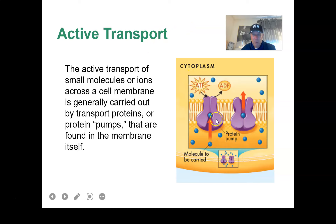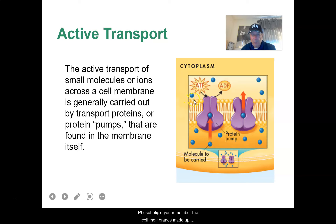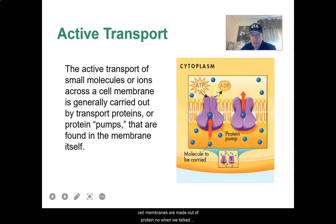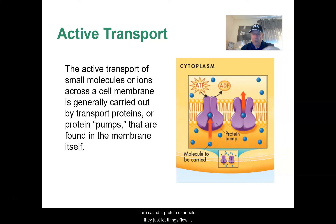If you look at this picture, we have a picture of the cell membrane. So we have the phospholipid — remember, the cell membrane is made up of a phospholipid bilayer. There it is: one layer, two layers. We also have some structures in the cell membrane made out of protein. Now, when we talked about diffusion, those protein parts of the cell membrane were called protein channels.